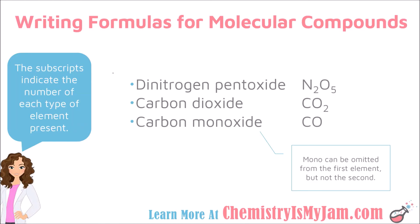Let's look at some examples of how molecular compounds are named. We are going to be using the prefixes we were just introduced to, and the prefixes are related to the subscripts — they indicate the number of each type of element present. In the case of N2O5, there are two nitrogens and five oxygens. The prefix for two is di, so we have dinitrogen. The prefix for five is penta, so it is pentoxide. The compound needs to end in -ide, and the prefixes tell me the number of each element present.